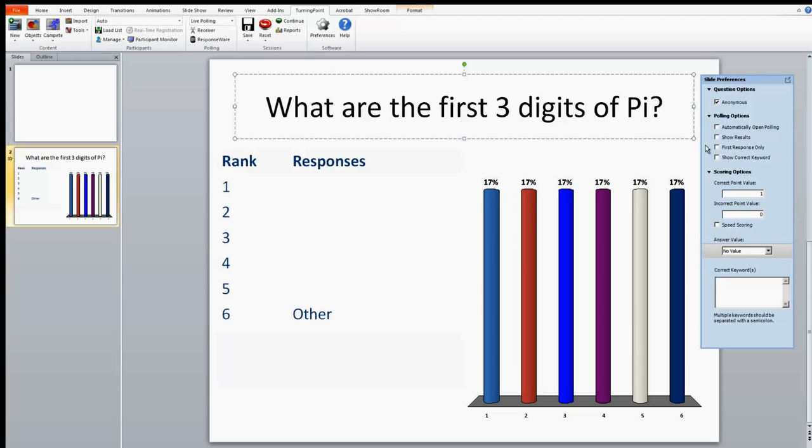Choose the polling options. Polling options include opening automatically, showing the results of the polling, accepting the first response only, and showing the correct keyword once the polling is closed.